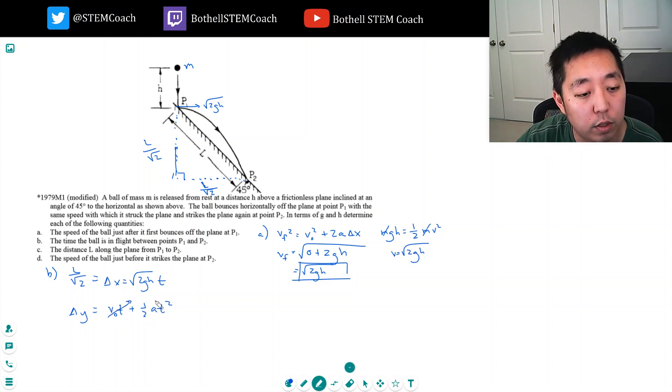And in the vertical direction, the only acceleration is g, so it's one-half g t squared, and that equals l over the square root of two, right, because the vertical drop and the horizontal travel is the same.